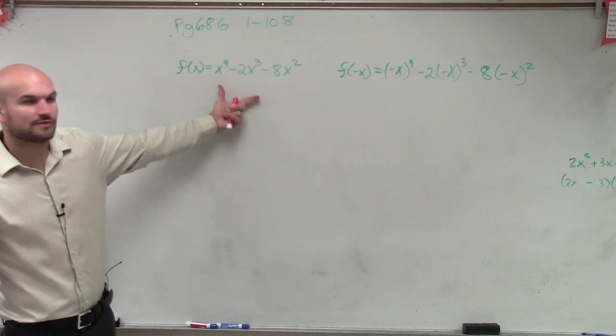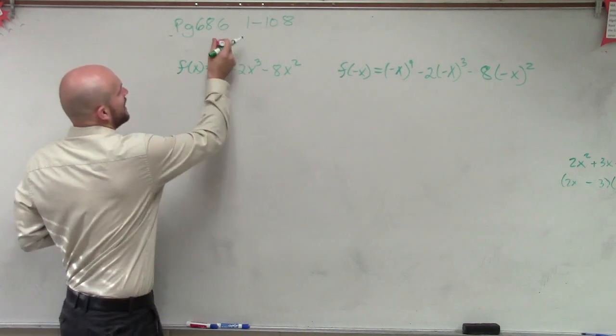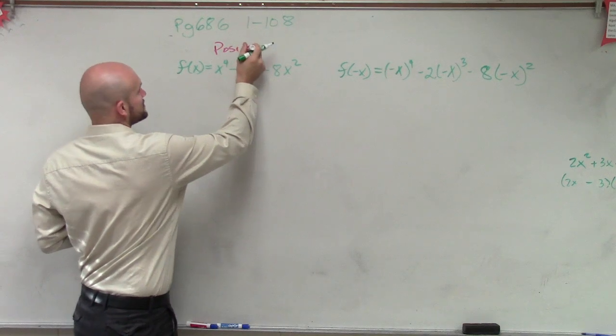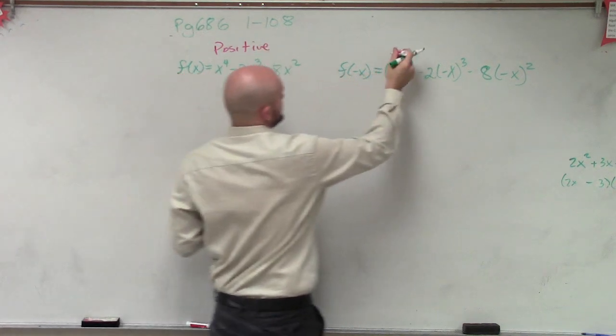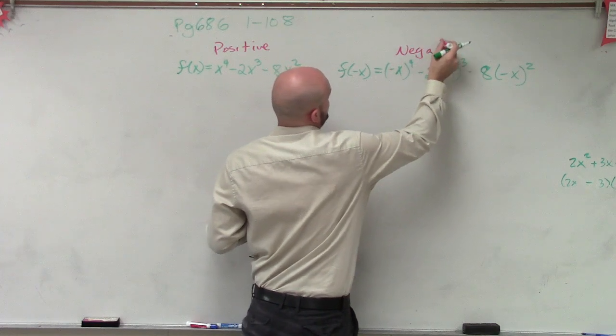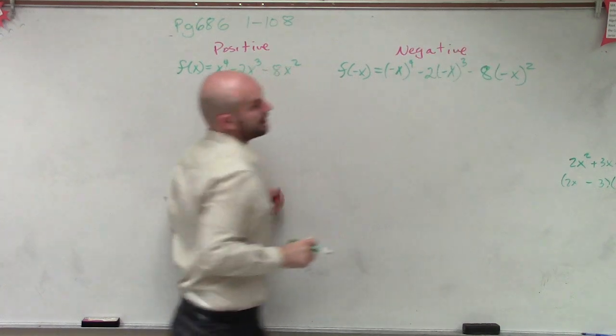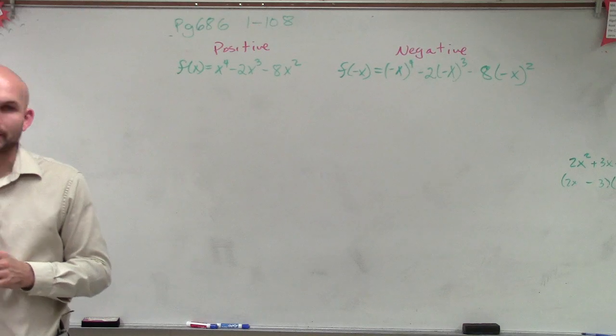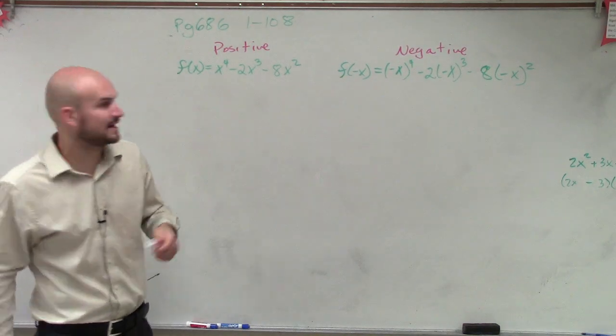So we're going to look for this. This is going to tell us the number of positive real zeros, and this will tell us the number of negative real zeros. So now what we need to do is simplify. Before we get to the positive, let's simplify the negative.